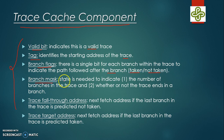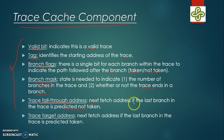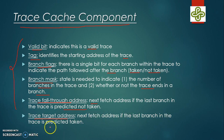Next is the branch mask, which indicates the number of branches in the trace and whether the trace ends in a branch. The trace fall-through address fetches the address if the last branch in the trace is predicted not taken. The trace target address fetches the address if the last branch in the trace is predicted taken.